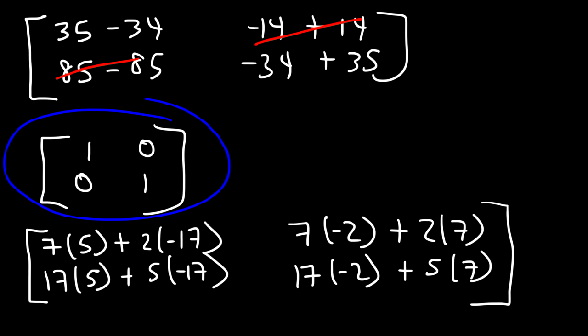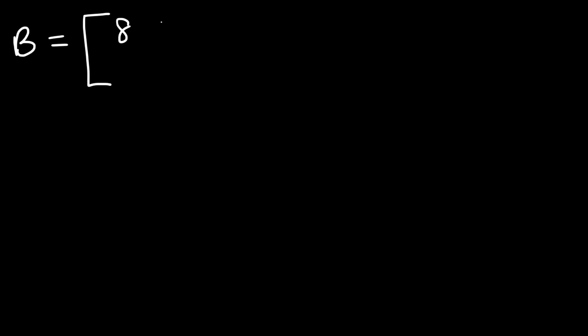We do get the multiplicative identity matrix, which confirms that what we found was indeed the inverse of matrix A. Now it's your turn. Let's say we have matrix B, still a 2 by 2 matrix, with elements 8, 6, 5, and 4. Determine the inverse of matrix B, and then show that those two matrices are definitely inverses of each other.